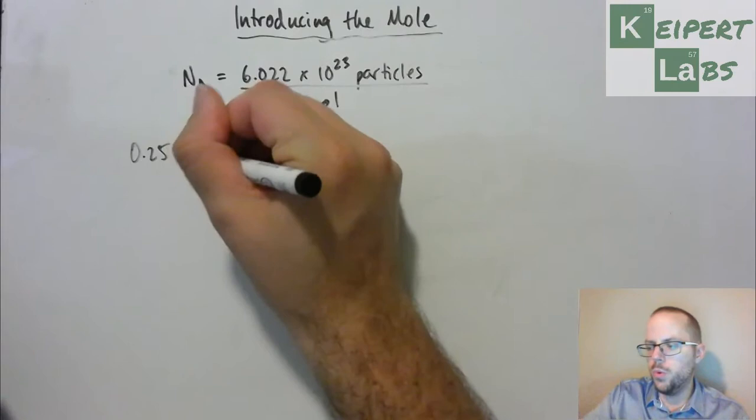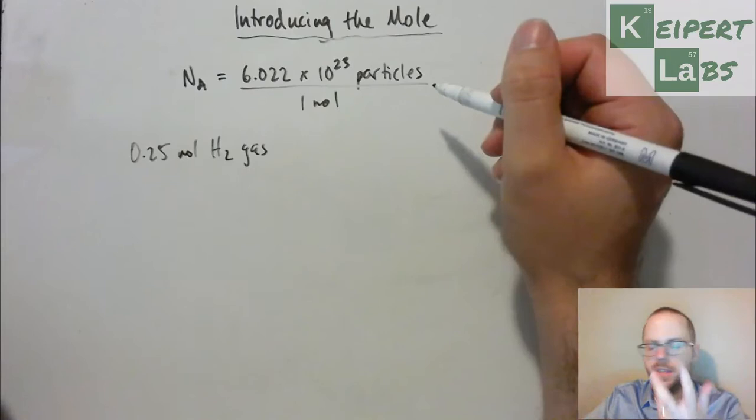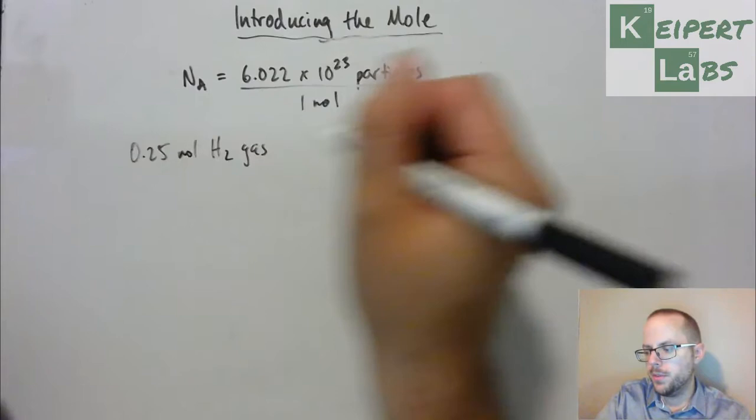So, saying, if we have a quarter of a mole, 0.25 moles of hydrogen gas, how many particles do we have? So, we can use this as a conversion factor just like we did with density in the past. And we can say, so the number of particles, maybe we'll just say particles of H2 is equal to 0.25 moles.